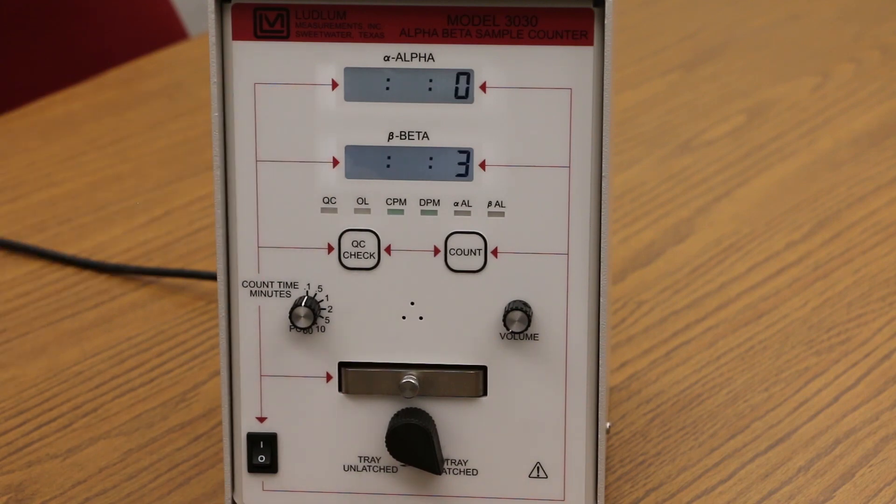Colons will be displayed during the count. At the end of the count the colons will disappear and the total number of counts received in the alpha and beta channels will be displayed.